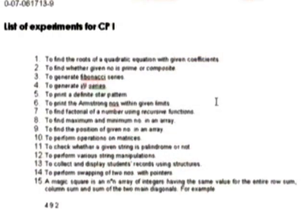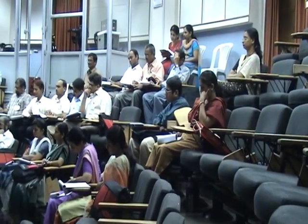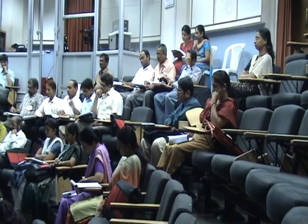For first year practicals, students have 20 programs to perform. The list of experiments for CP1 starts with things they know from mathematics, like finding roots of a quadratic equation, and they convert that logical problem into a programming language. In each program, they have to do something new compared to the previous one — that is the strategy. The list is prepared ahead and available to everyone. Faculty have flexibility: if one wants Fibonacci series but another wants a different series, they can change it. There is no specific rule — that flexibility is there.